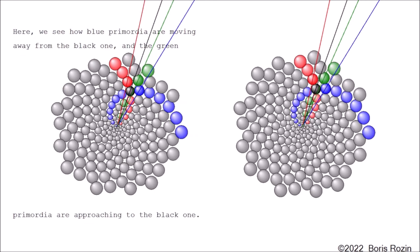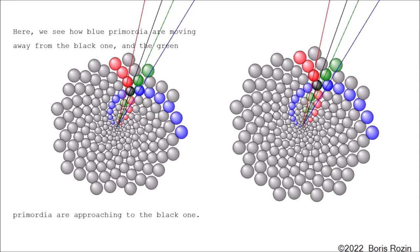Here we see how blue primordia are moving away from the black one, and the green primordia are approaching the black one.